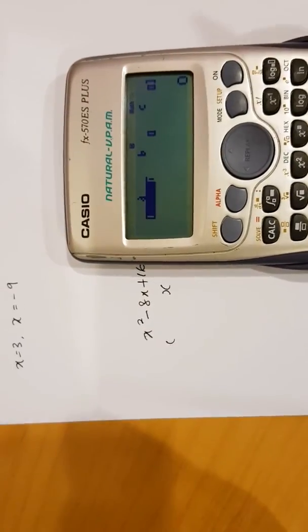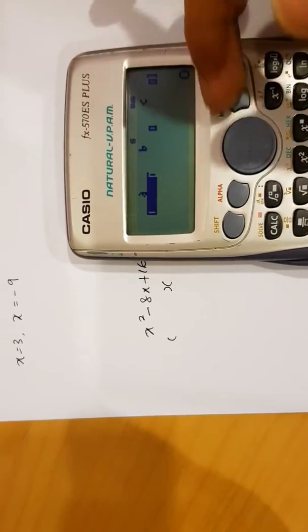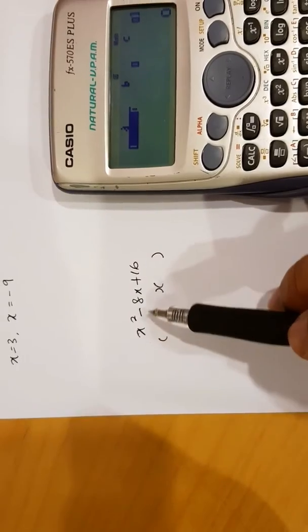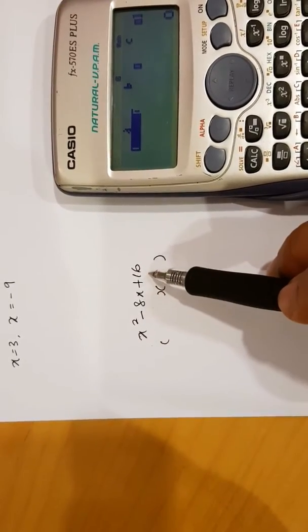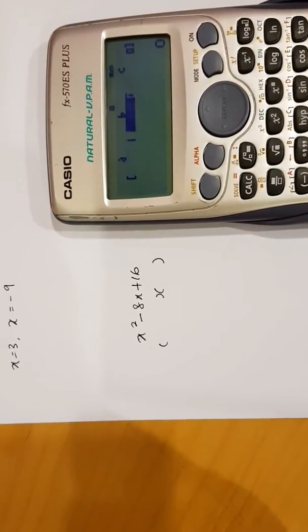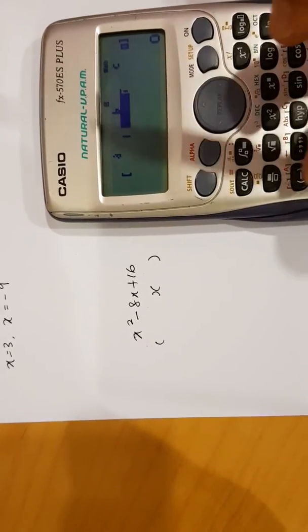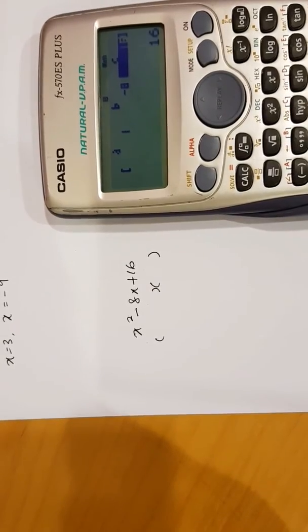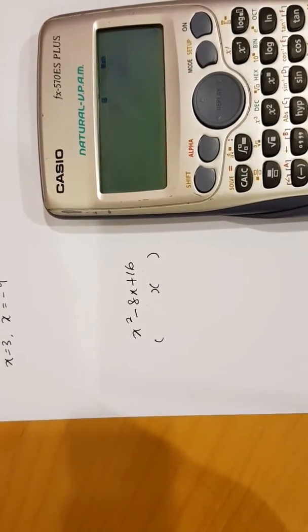I press AC. It comes back to this screen again where I can have A, B, and C. Once again, this A is 1, B is negative 8, and C is 16. I go ahead and type 1, press equal. Then, next one is negative 8, equal.